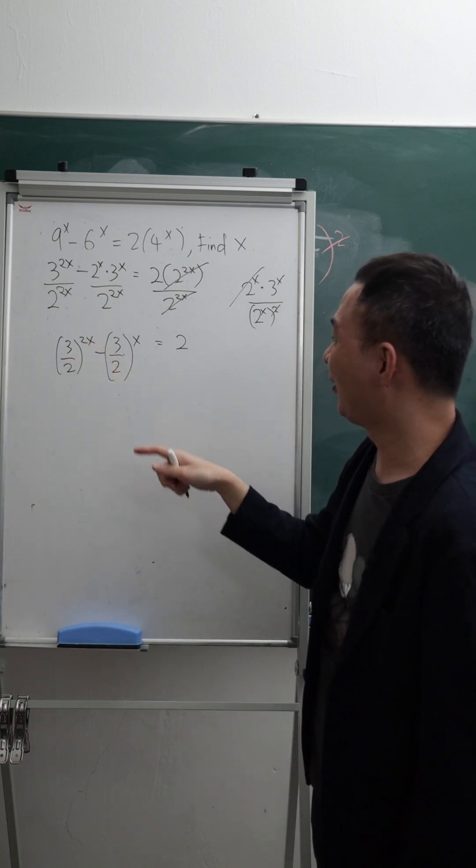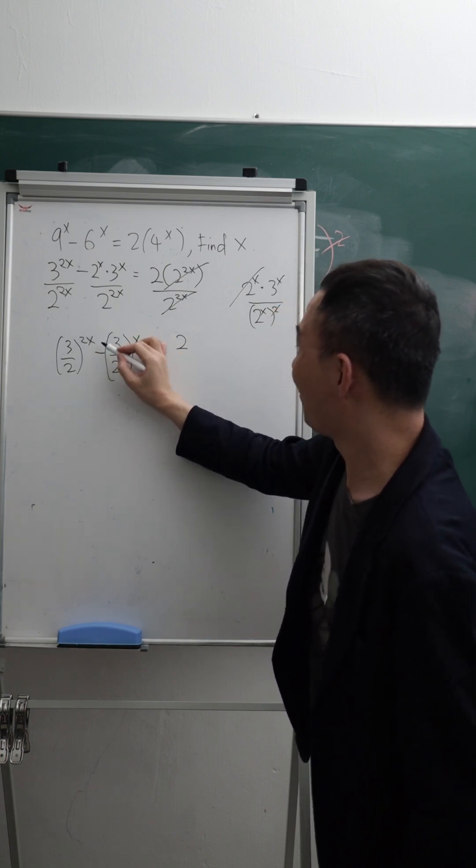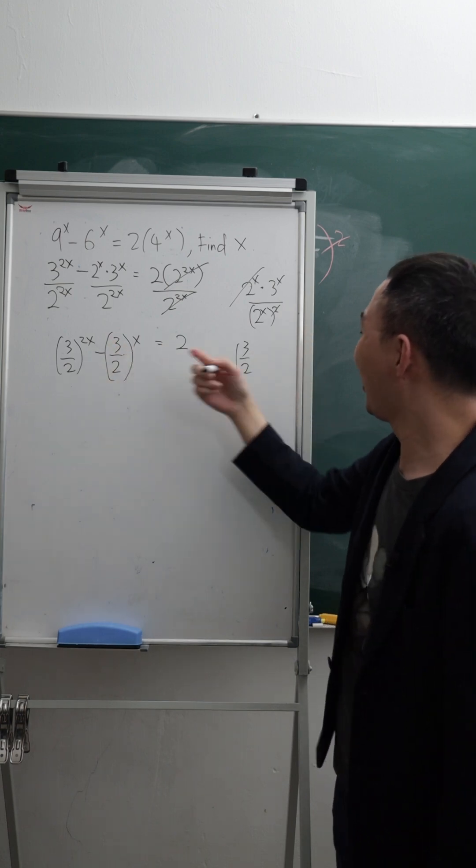So this one, what I can do right now is I can literally take the 2 out. Because 3 over 2 power of 2x, can I say this is 3 over 2 and then the whole thing power of x and then whole thing squared.